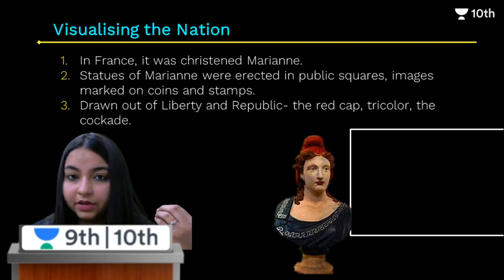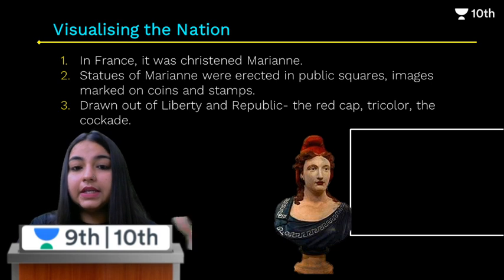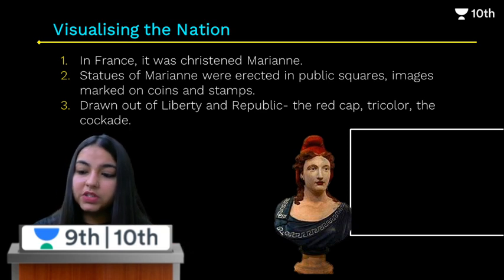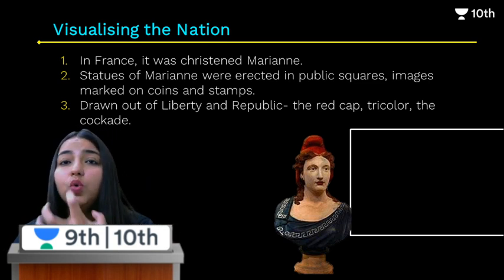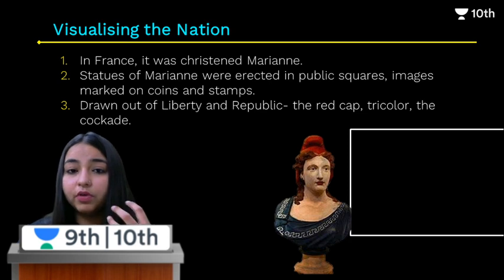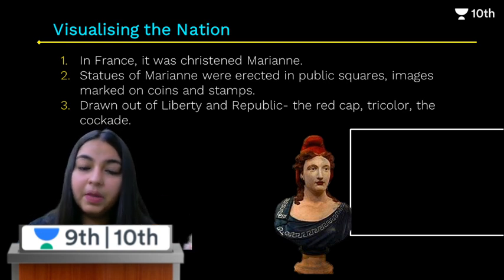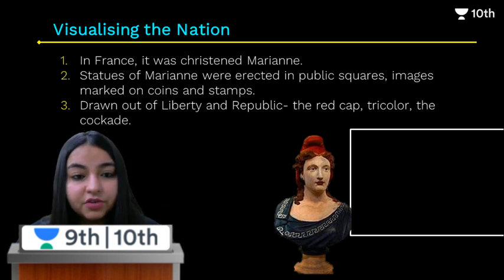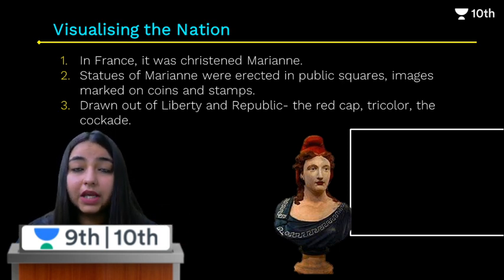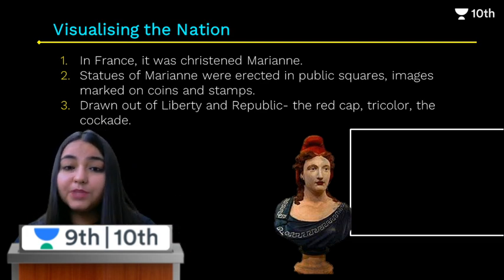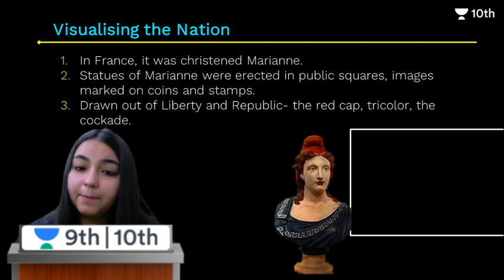The female allegory for justice in France was called Marianne — a very popular Christian name. This was done to develop an idea of a 'people's nation' — to connect the people with the nation. To do this, they placed statues of Marianne in public places everywhere, and Marianne's image was also stamped on coins and stamps.